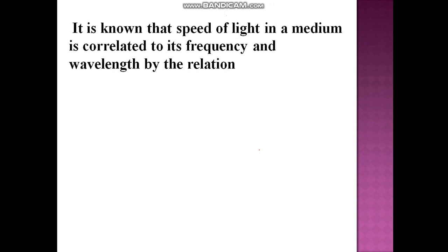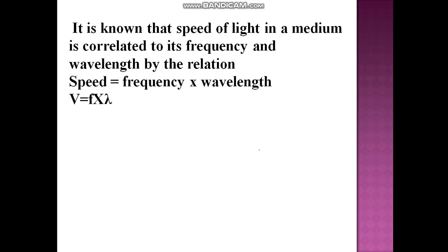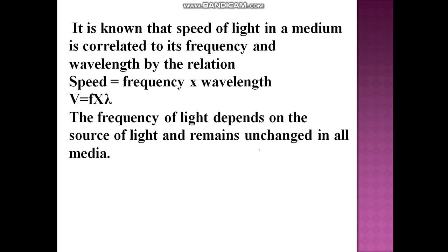Now, we all know that speed of light in a medium is correlated to its frequency and wavelength. The relationship is: speed is equal to the product of frequency and wavelength, that is v = f × λ, where v is the velocity, f is the frequency, and λ is the wavelength. The frequency of light depends on the source of light and will remain unchanged because we don't change the source.